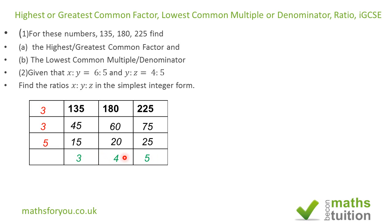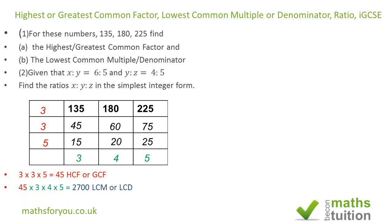The last line — 3, 4, and 5 — has no common factors, so we stop there. The highest common factor is 3×3×5, which gives us 45. That's the HCF (or GCF). For the LCM or LCD, we multiply the HCF by the remaining bottom-row numbers: 45×3×4×5 = 2700. That's the LCM for 135, 180, and 225.